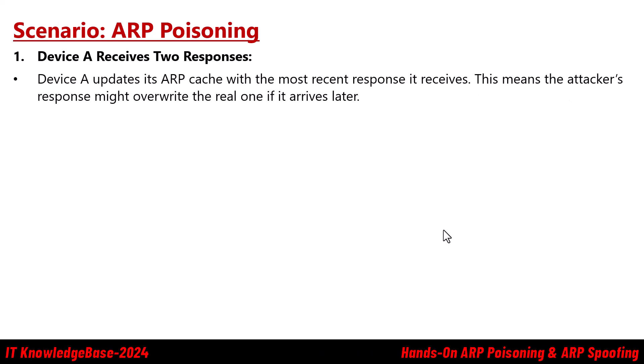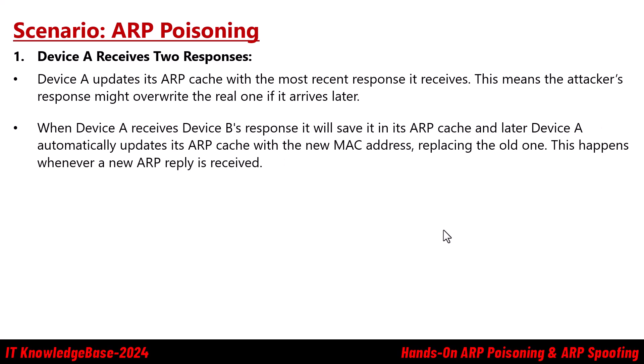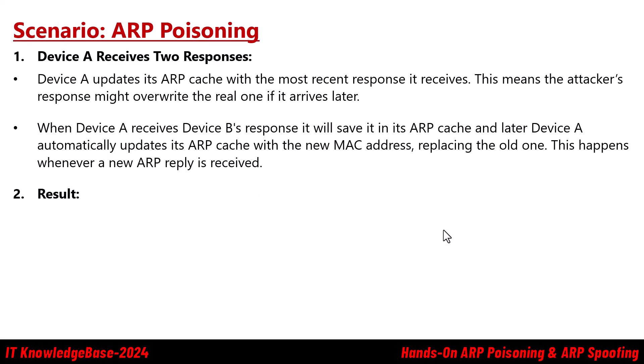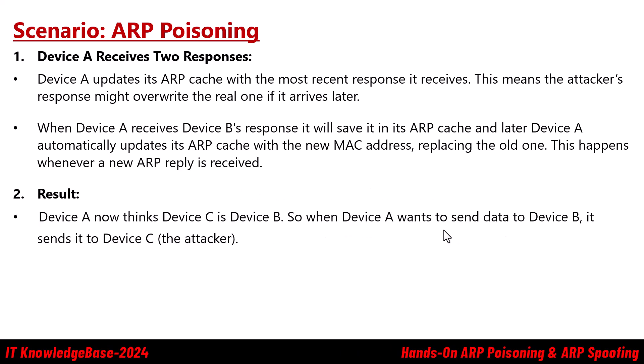Device A receives two responses and updates its ARP cache with the most recent response it receives. This means the attacker's response may override the real one if it arrives later. Device A saves Device B's response initially, but then automatically updates its ARP cache with the new MAC address, replacing the old one whenever a new ARP reply is received. The result is that Device A now thinks Device C is Device B.